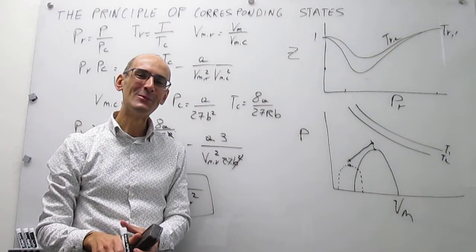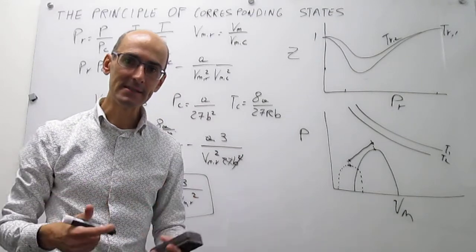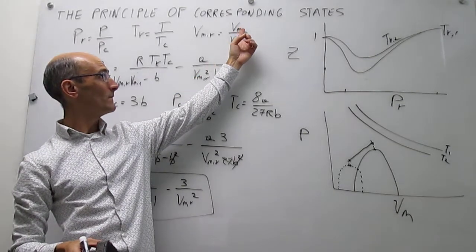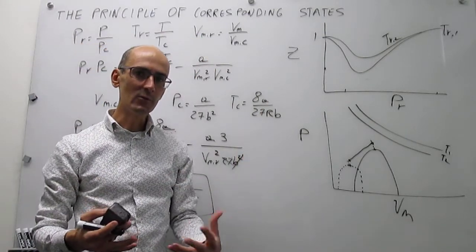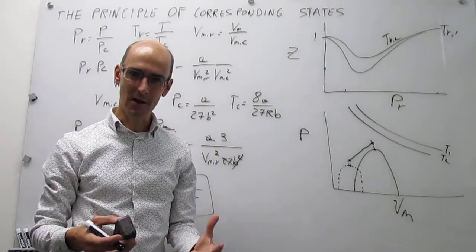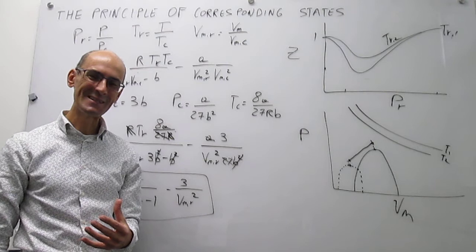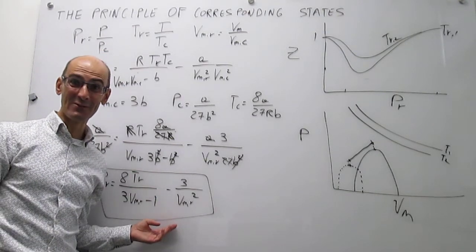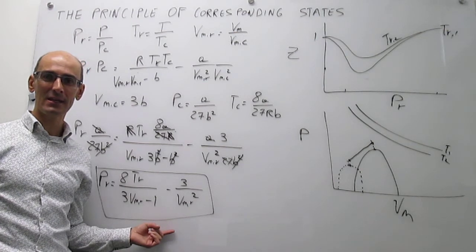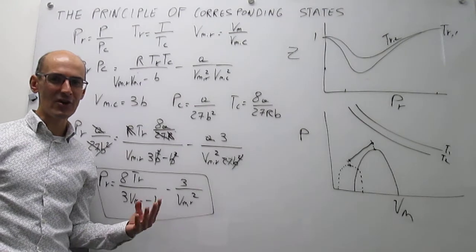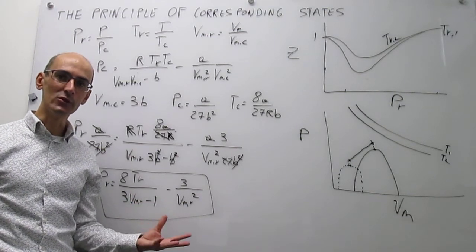In this video we have seen the principle of corresponding states. If you define a physical state in terms of reduced variables — which simply relate the physical variables to the values at the critical point for each specific gas — then in those corresponding states the properties of the gases are generally the same, though not for every gas. We proved this by deriving the van der Waals equation of state in terms of reduced variables and demonstrating that there is no sensitivity to the constants a and b that are specific to each gas, meaning each gas should exhibit similar behavior at the same reduced physical state.